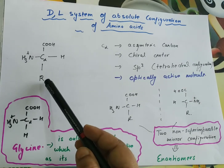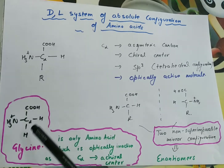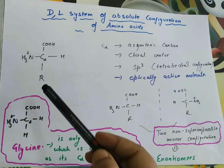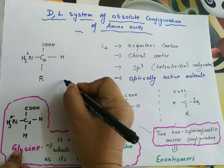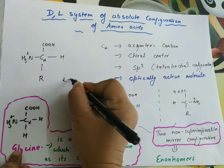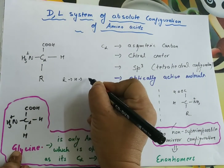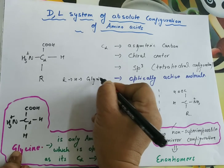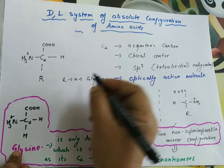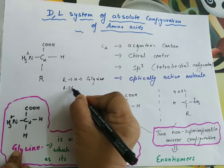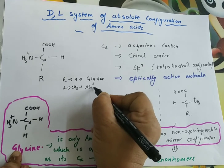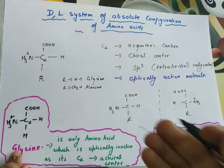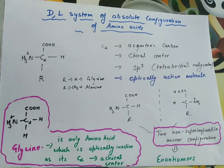For example, if R is replaced by H then it becomes glycine. If R is CH3, then the amino acid is alanine, and so on. All 20 different amino acids have 20 different R groups.